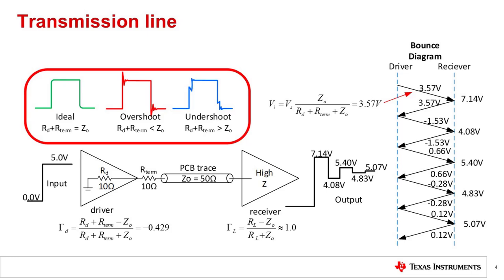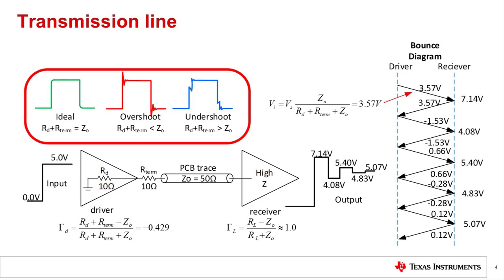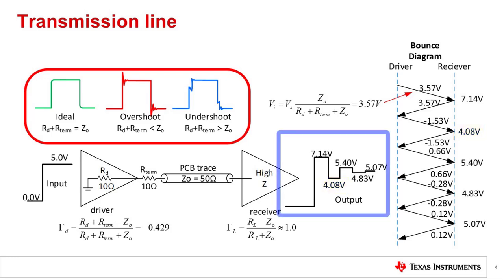When a 5-volt step is first applied, a voltage divider forms between the driver impedance and the trace impedance so that the signal on the PCB trace is 3.75 volts. Based on the trace length, it will take some time for the signal to travel to the receiver. When the signal reaches the receiver, there will be 100% reflection, and the initial signal seen by the receiver is 7.14 volts. The reflected signal travels back to the driver where it is again reflected by minus 0.429 because of the impedance mismatch. This reflection travels back to the receiver and causes the signal to drop to 4.08 volts. This process continues and you see the output waveform shown.